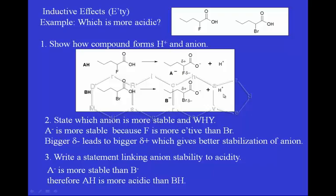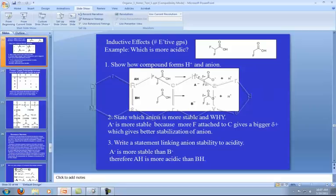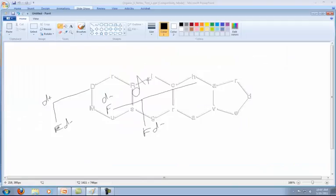The last effect I want to talk about is adding more of the same group to the same atom — here we're seeing two fluorines versus one fluorine. We can find that two delta minuses on the same carbon give a delta plus, and one delta minus gives a delta plus on that carbon too. However, one delta minus will produce a smaller delta plus on the C, while two delta minuses will produce a bigger delta plus — so little delta plus in the one-F case, big delta plus in the two-F case.